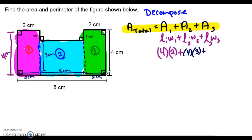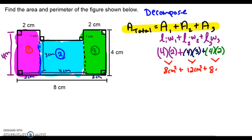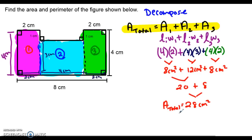For Rectangle 3, the length is 4 centimeters and the width is 2 centimeters. So for Rectangle 1: 4 times 2 is 8 square centimeters. For Rectangle 2: 4 times 3 is 12 square centimeters. For Rectangle 3: 4 times 2 is 8 square centimeters. So the total area for the compound figure is 8 plus 12 plus 8, which gives us 28 square centimeters in total.